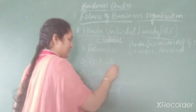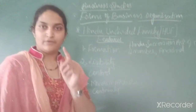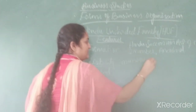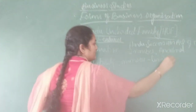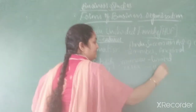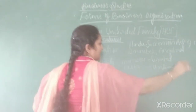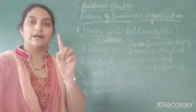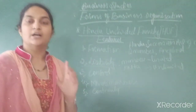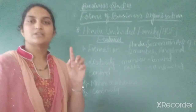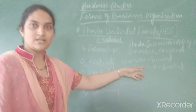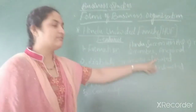The next feature is liability. The liability of members — that is, co-parceners — is limited. Except for the Karta: the Karta has unlimited liability. The members of HUF will have limited liability, except the Karta who has unlimited liability because he is the person responsible for controlling the business. The remaining co-parceners will have limited liability.